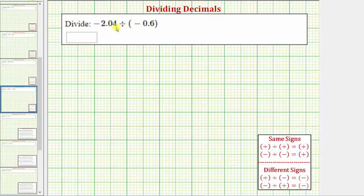We're asked to divide. We have negative 2.04 divided by negative 0.6.